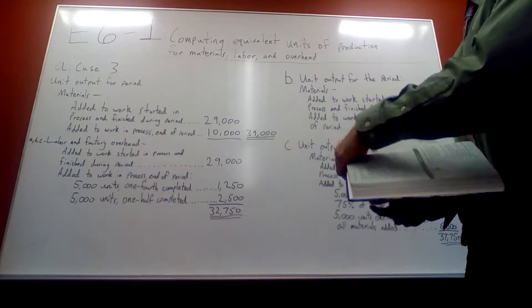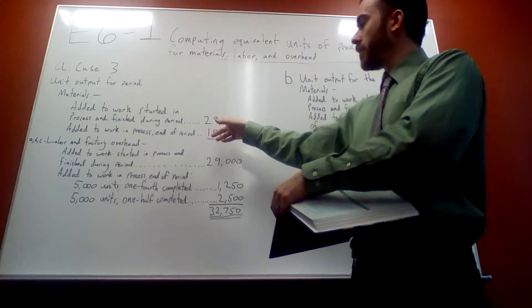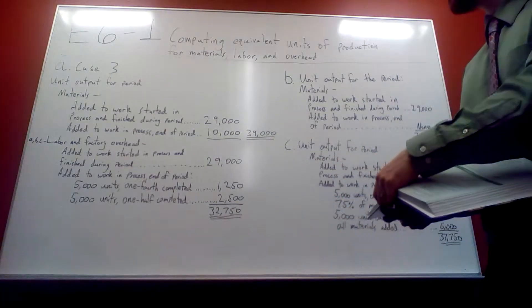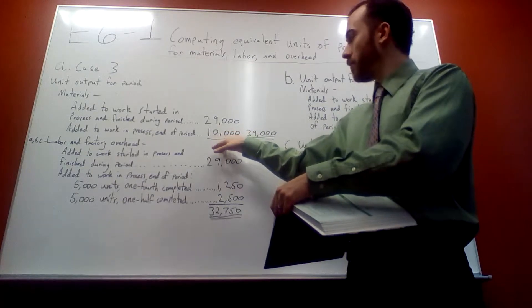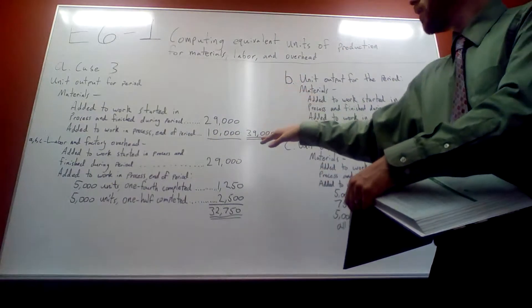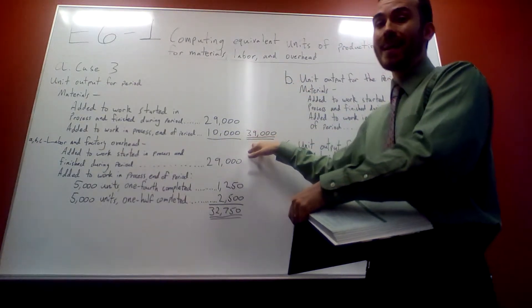So the units, the finished units, the ones that are finished during the period, you add the full amount of 29,000, plus the ending, the two 5,000 ending, which equals 10,000, they're all 100%, which gives you equivalent units of 39,000.